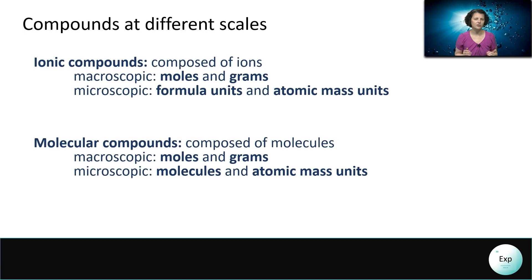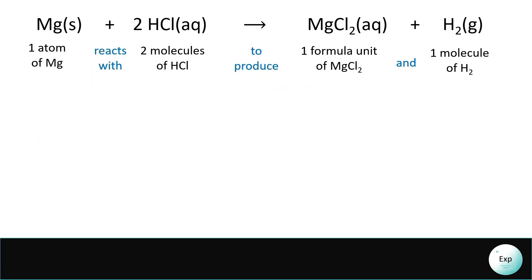So how does this translate into what we see in a chemical equation? Every chemical equation can be interpreted at the microscopic scale and macroscopic scale. In both of those instances, we can talk about the smallest building blocks, and we can also talk about the associated masses. In the next two slides, I will talk about the microscopic interpretation with the smallest building blocks, the macroscopic interpretation with moles, and the macroscopic interpretation with grams.